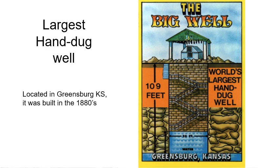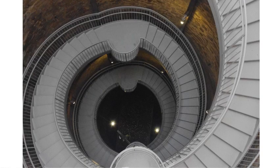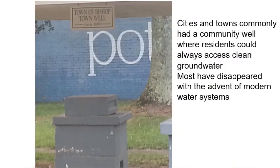The steam locomotives coming through Greensburg needed water to make steam, and this town wanted to be a big railroad stop, so they dug this big well to attract the railroads. Most cities and towns in the old days, before modern plumbing, had a community well — a place where everybody in that area could go get water and take it back to their house. This is the town of Bishop, Georgia near Athens, where the town well was. It's capped over now because we all have plumbing, but towns and people lived near places where they could get to clean groundwater.